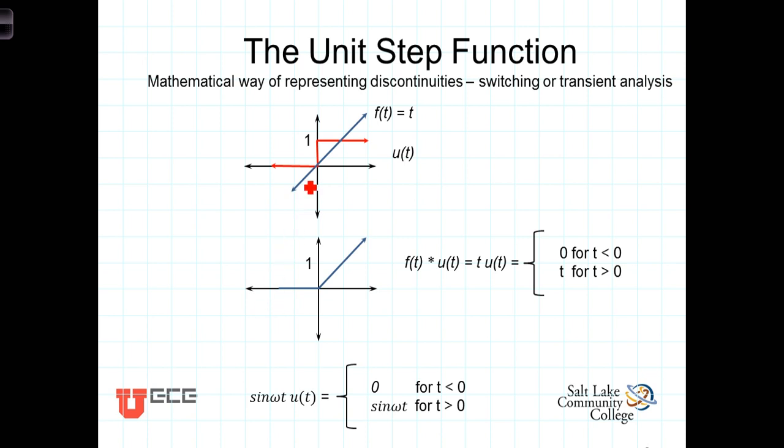For T less than zero, the unit step function is zero, so zero times T is zero. At T equals zero, then, the unit step function turns on, and we have then T times one, or just the function f of T equals T for T greater than zero. So this product creates a stepwise continuous function, T u of T, which is zero for T less than zero, and equal to T for T greater than zero.